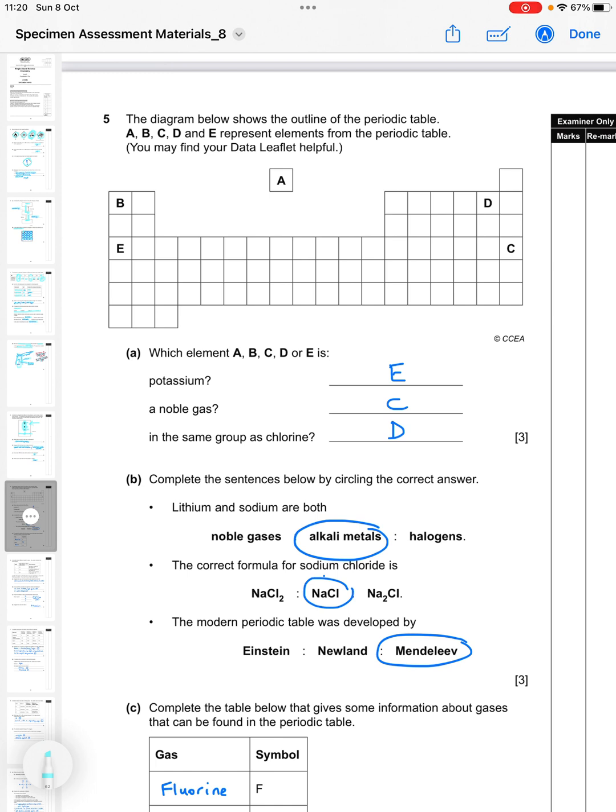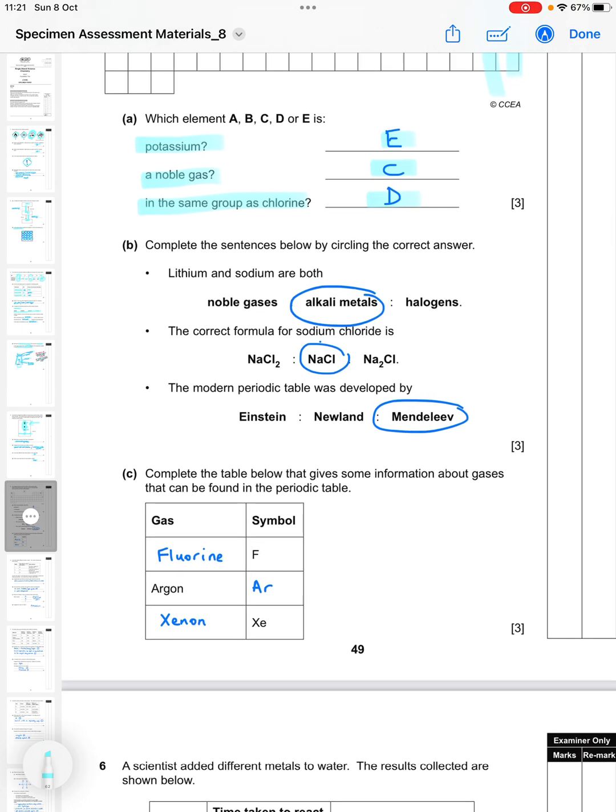Question five: this one's about the periodic table. The diagram shows the outline of the periodic table. You may find your data leaflet helpful - so if it says you may find your data leaflet helpful, take the data leaflet out, open it up and look at it. Which one is potassium? Potassium is here, you can find it on your periodic table, you should know it's in group one and it's E. Which one is a noble gas? Has to be in this column here so that is C. Which is in the same group as chlorine? If you're not sure what group chlorine is, use your data leaflet, but it's group seven so that is D.